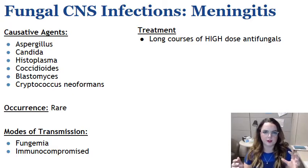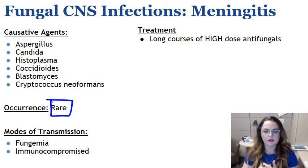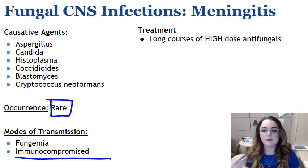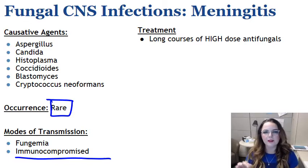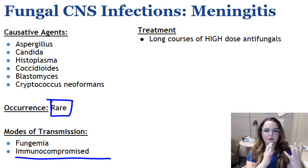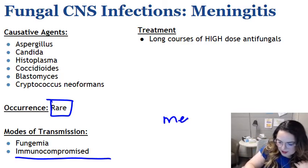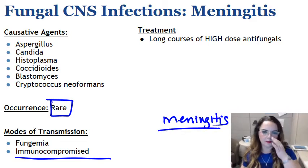Fungal infections of the CNS are really not very common at all — they're a fairly rare occurrence. When they do occur, it's typically in an immunocompromised patient, specifically the HIV and AIDS community, who have been most significantly affected, specifically by Cryptococcus. Typically fungal infections of the brain manifest as meningitis symptoms, essentially similar to what you would see with bacterial meningitis, just with a different cause.